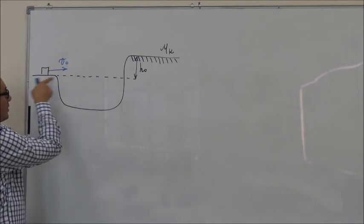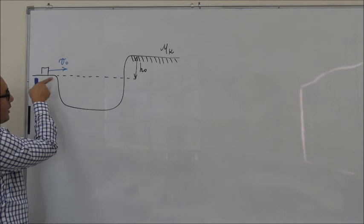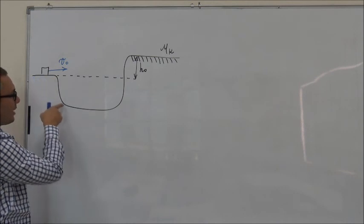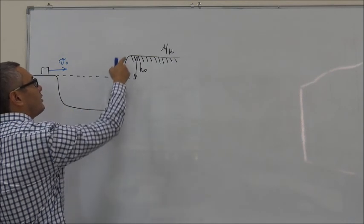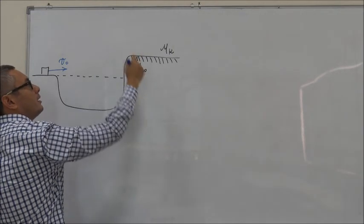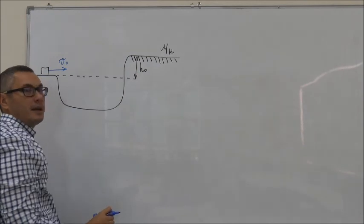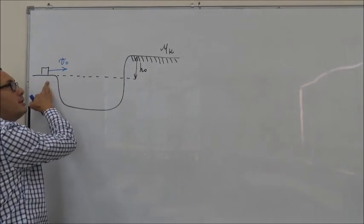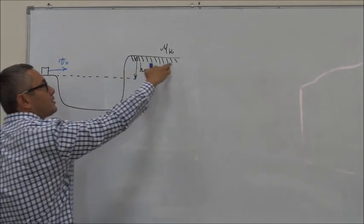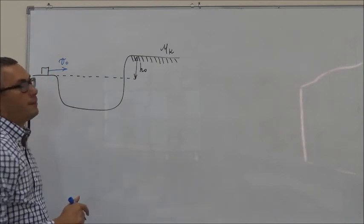The block then travels, and as it travels, it gets into this valley, which is also frictionless, then goes up here to another surface which is at a height H0 above the original one. On the upper surface, the surface happens to be rough.